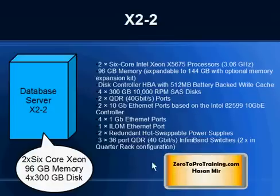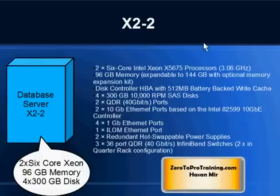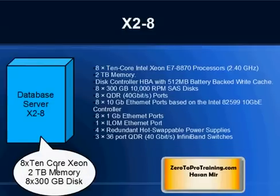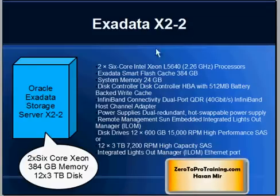At a high level, the X2-2 database server is a 2 by 6-core Xeon machine with 96 gigabytes of memory and 4 by 300 gigabytes of hard disk — per server, with multiple of these in a cluster. In comparison, the X2-8 is an 8 by 10-core Xeon with 2 terabytes of memory and 8 by 300 gigabytes of disk per server. There is only one configuration of the storage server: a 2 by 6-core Xeon with 384 gigabytes of memory and 12 by 3 terabytes of disk space. For full details, you can pause the video or visit Oracle's website.